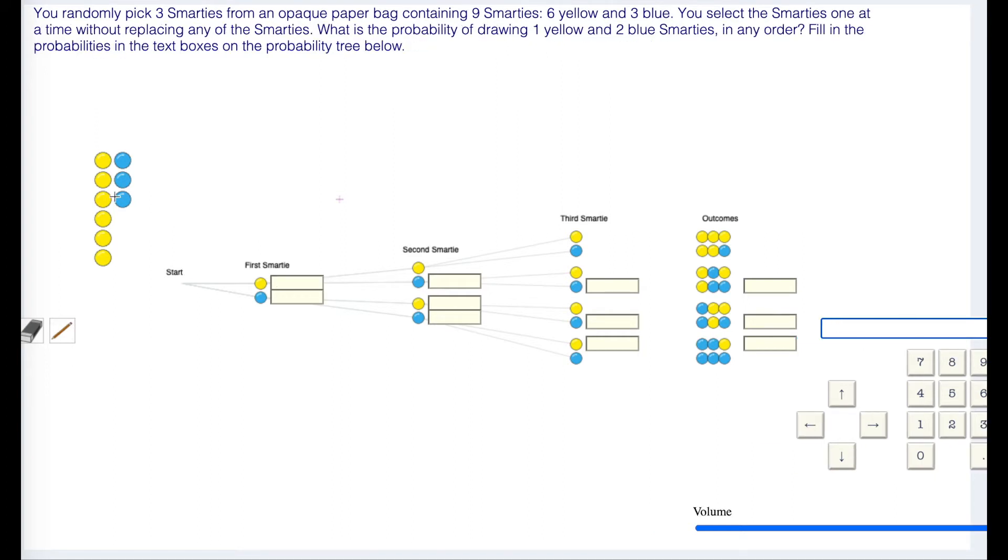To get a yellow Smartie, we have six out of nine are yellow. We have a 6/9 chance, so six out of nine. Then a blue. You no longer have nine Smarties, you have eight Smarties, and three are blue, so three out of eight.